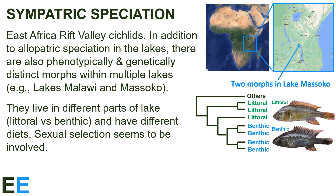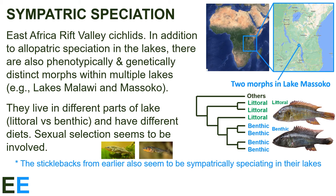Another famous example of sympatric speciation comes from East Africa rift valley cichlids. In addition to allopatric speciation in the lakes, there are also phenotypically and genetically distinct morphs within multiple lakes — Lakes Malawi and Masoko in particular. These different color fish live in different parts of the lake, littoral versus benthic, and have different diets. Phylogenetic studies indicate that the littoral and benthic populations in the lakes are more closely related to each other than to any other fish. These two species diverged after being separated as a single population when the lake formed. While they use different parts of the lake — littoral ones the shoreline, benthic ones deeper water — they are often encountered together and mix easily. Detailed studies have shown that sexual selection seems to be involved in assisting with reproductive isolation. Incidentally, the sticklebacks from earlier also seem to be sympatrically speciating in their lakes too, suggesting sympatric speciation in lakes is common.